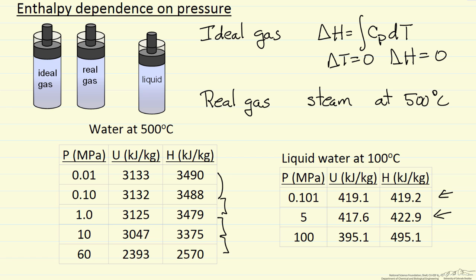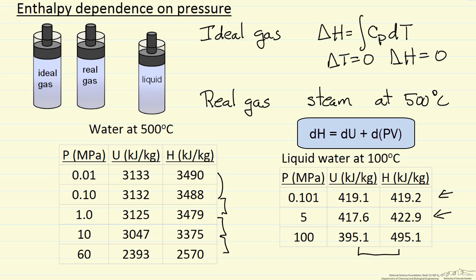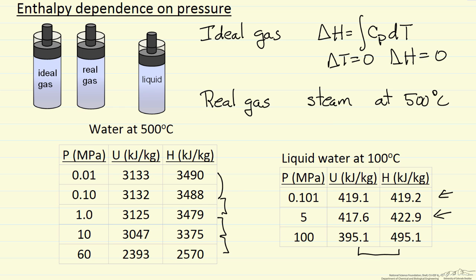Notice internal energy decreases as we raise pressure, but enthalpy increases because of the PV term. The difference between these two of 100 is due to that pressure-volume term because we're now at 1,000 bar pressure. So enthalpy for a liquid, except at very high pressures, is also relatively insensitive. We can't compress a liquid very much, and therefore we don't change its properties when we raise the pressure.